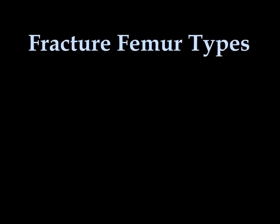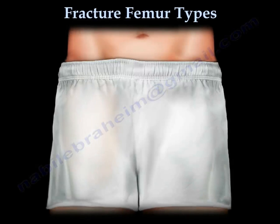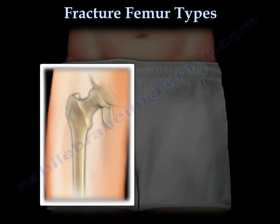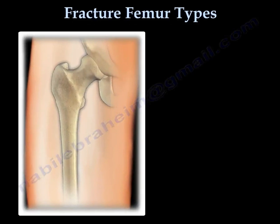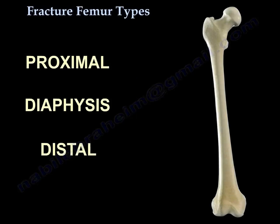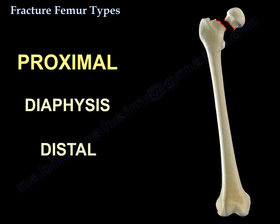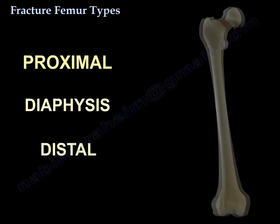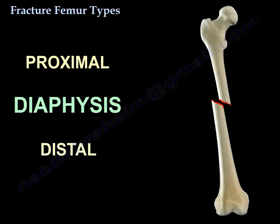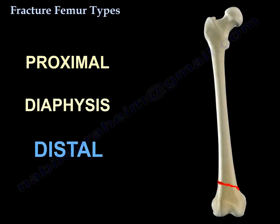Fracture femur types. Femur fractures can occur in the proximal part of the femur, in the diaphysis, or in the distal part of the femur.